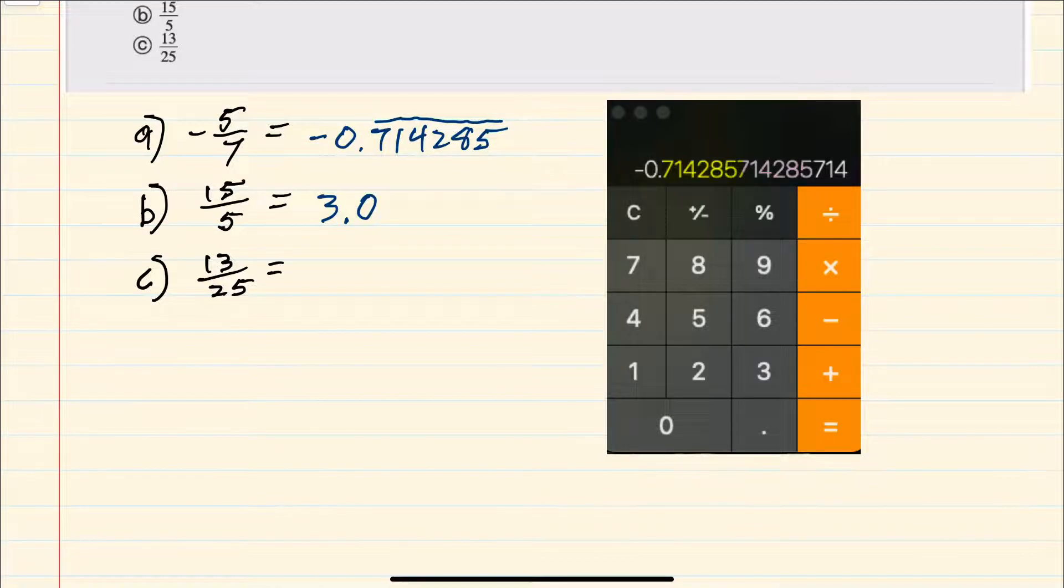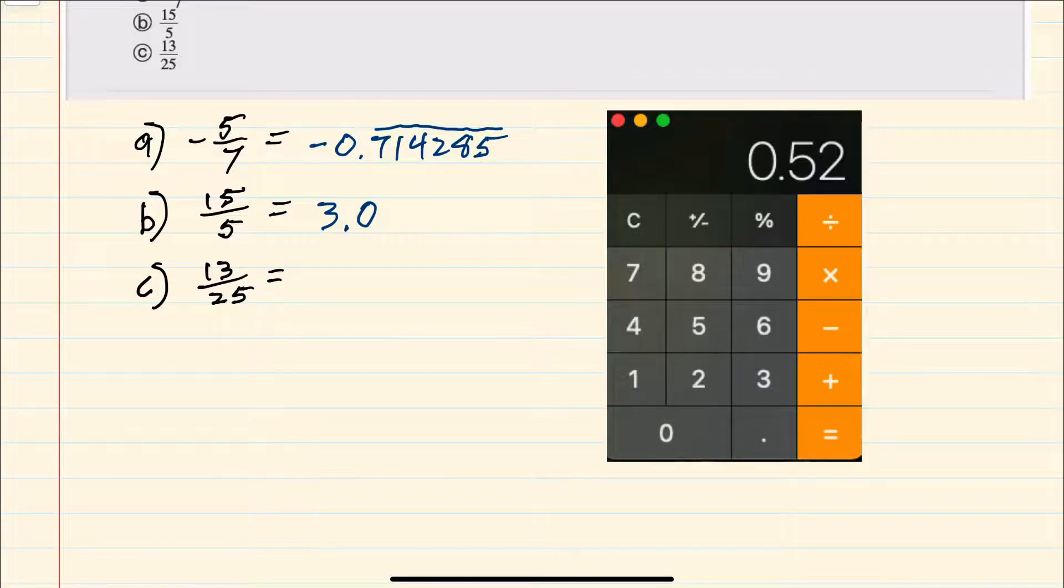and again here, I'll turn to a calculator. This time, when we put in 13 divided by 25, the decimal stops after two decimal places, so this is terminating as 0.52.